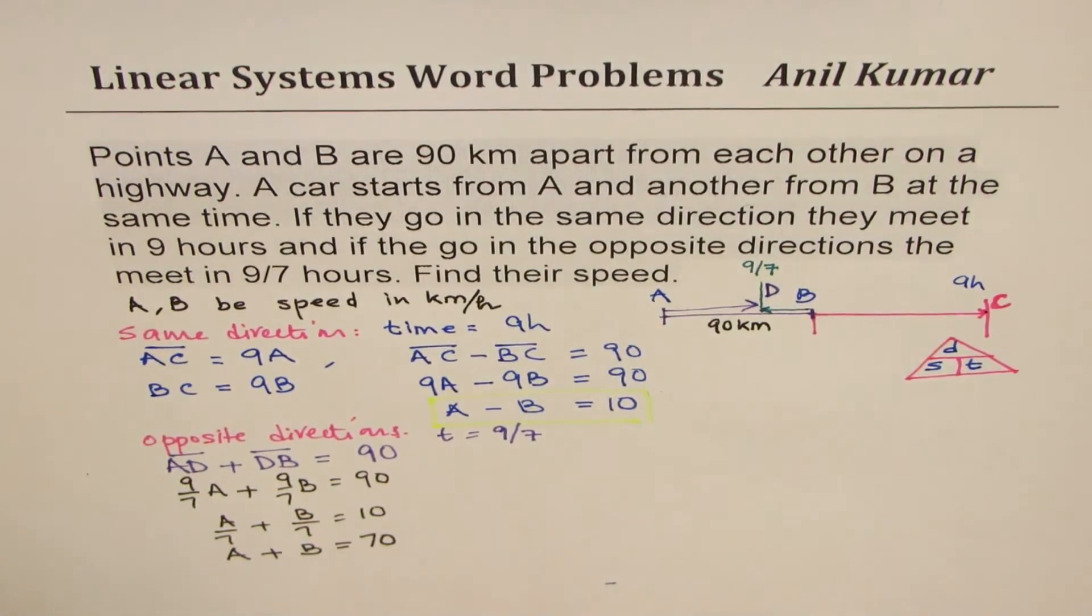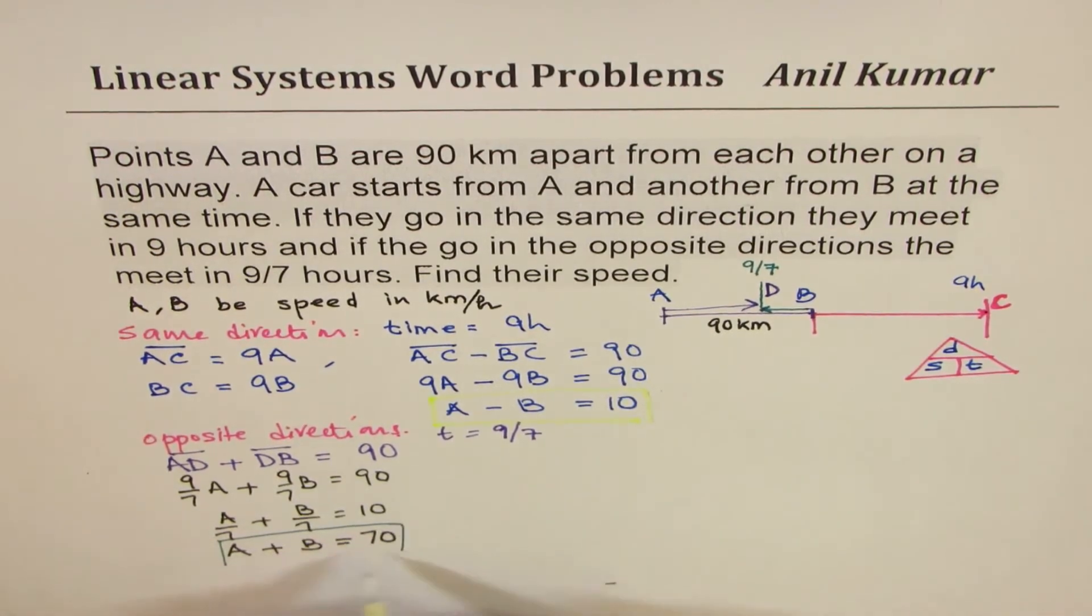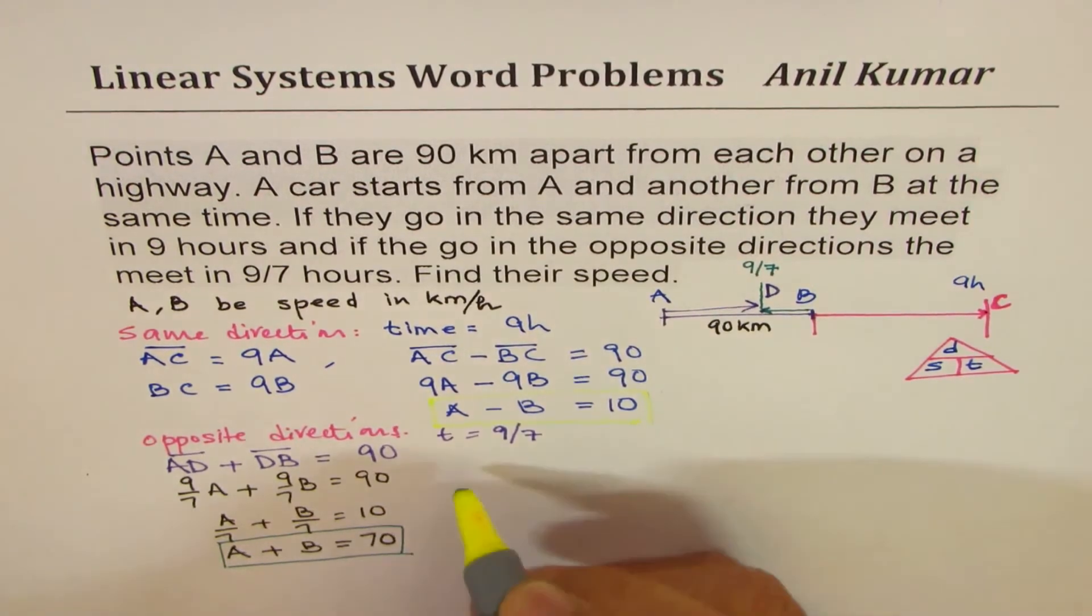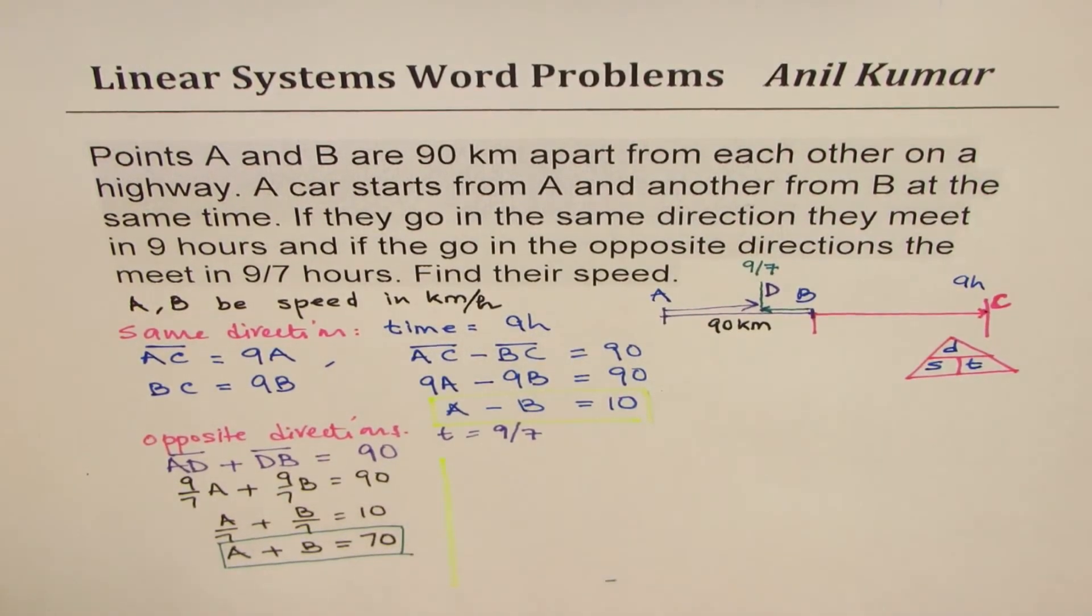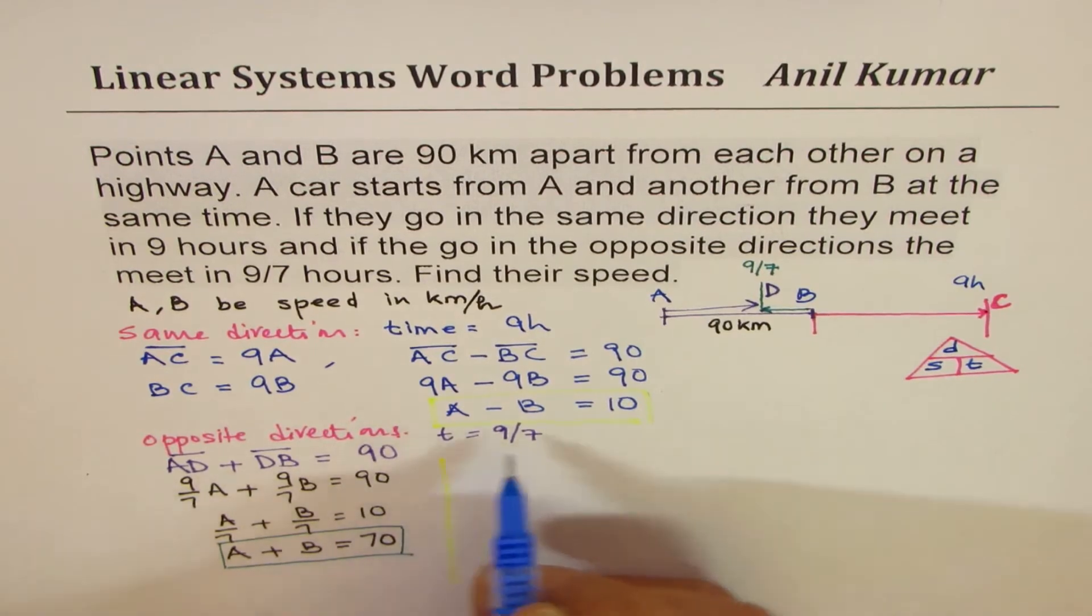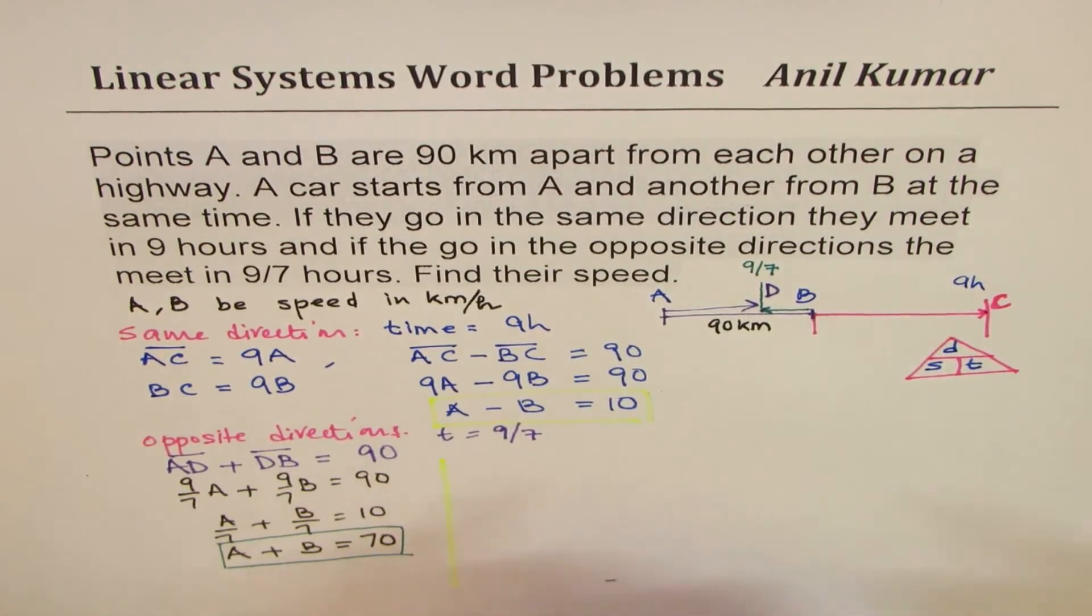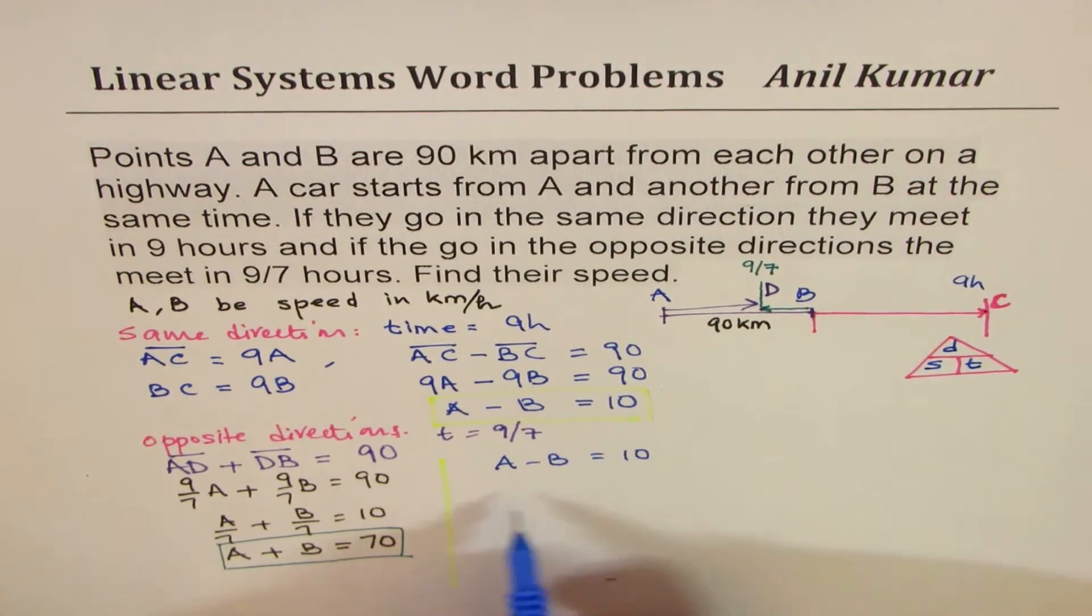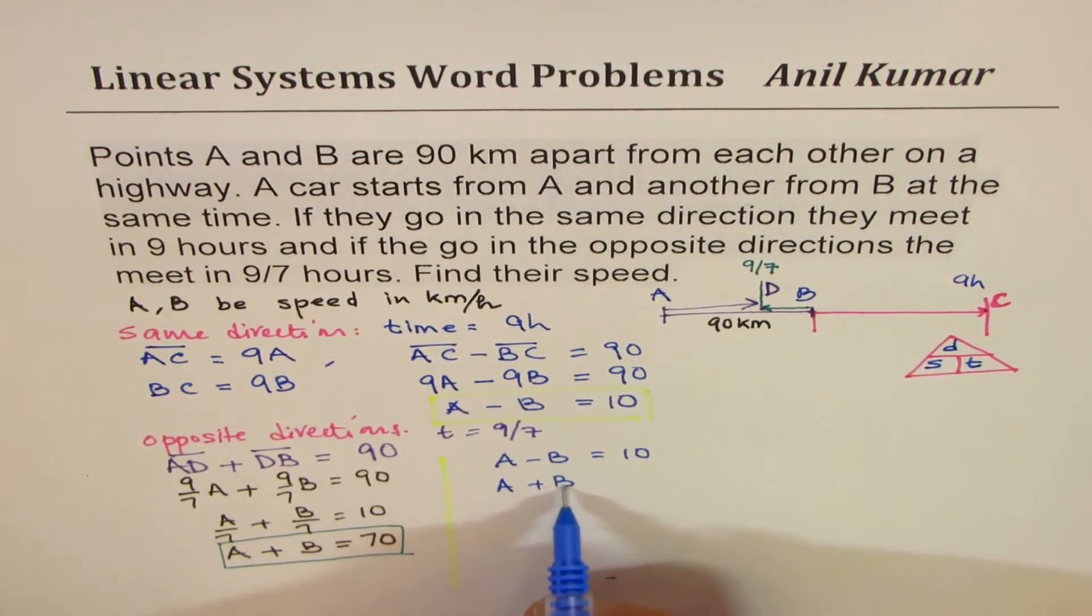So we get another equation here, which is A plus B is 70. So we have two equations to work with. So the two equations are, let's rewrite these equations. A minus B equals to 10, and A plus B is equals to 70.